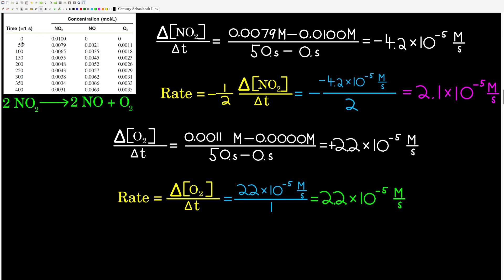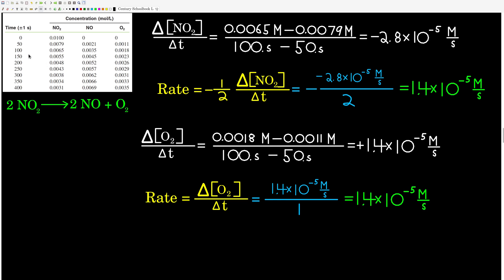Now let's look at the period from 50 to 100 seconds. Using nitrogen dioxide: (final concentration − initial concentration) / (100 − 50) = −2.8 × 10⁻⁵ mol/L/s. The rate = (−1/2) × (−2.8 × 10⁻⁵) = 1.4 × 10⁻⁵ mol/L/s. Doing the same with oxygen over the same period gives 1.4 × 10⁻⁵ mol/L/s — the same value, since the coefficient is one.